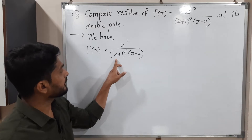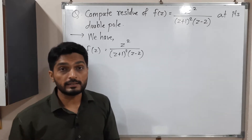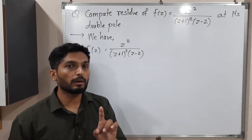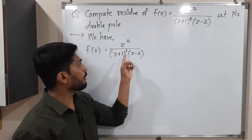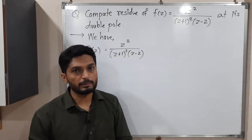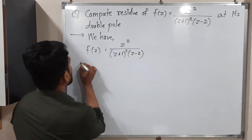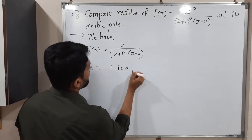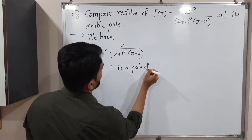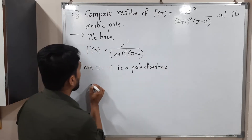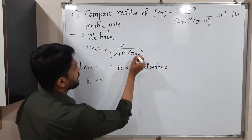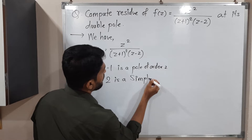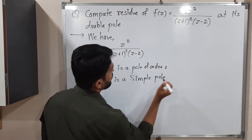Now let us talk about this bracket (z+1)². If I put z = -1, then -1 + 1 = 0. That means z = -1 is a pole of order 2. So I got the poles. To clearly mention: z = -1 is a pole of order 2, and z = 2 is a simple pole, which means pole of order 1.